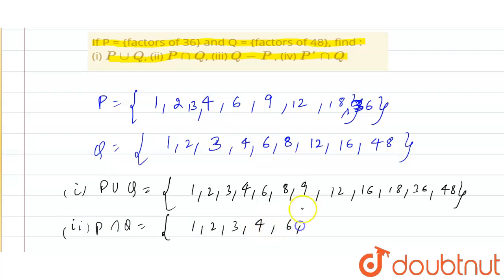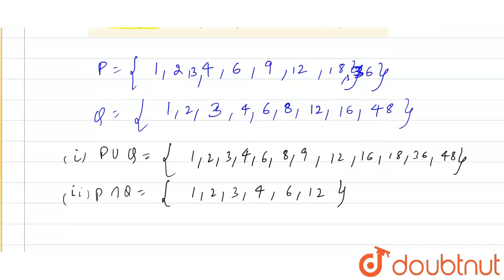The second part is P intersection Q. So that equals 1, 2, 3, 4, 6, and 12 only. Now the third option.